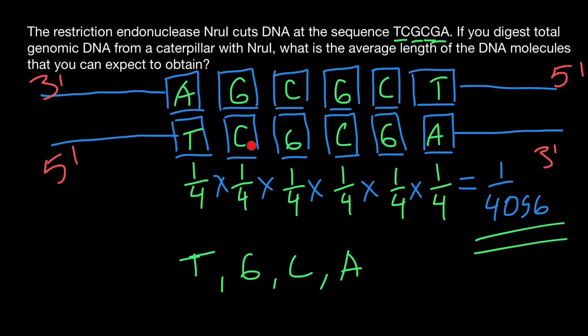Now take a look. Five prime end, TC. And here we have five prime end, TC. Then GC. And here GC. And GA here. And GA here.